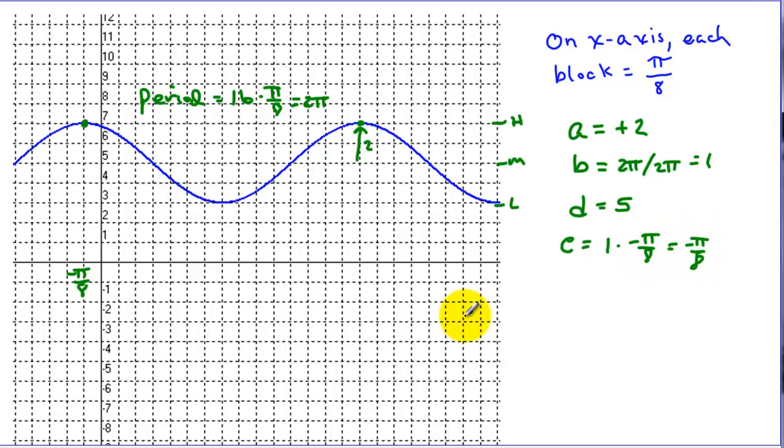Now we just plug into the template, so y equals 5, this time plus 2, cosine of x minus a negative π over 8, so x plus π over 8.